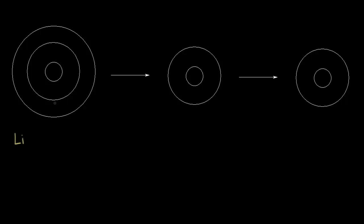Lithium has an atomic number of three, so there are three protons in the nucleus. In a neutral atom of lithium, the number of electrons equals the number of protons, so there are three electrons. The electron configuration is 1s2, 2s1 — two electrons in the 1s orbital and one electron in the 2s orbital. That gives us a simple picture of the neutral lithium atom.